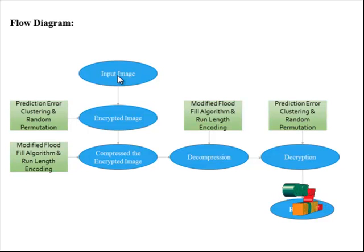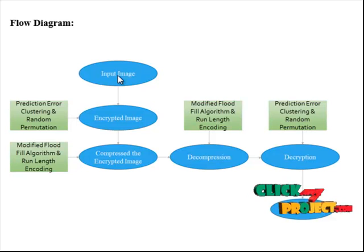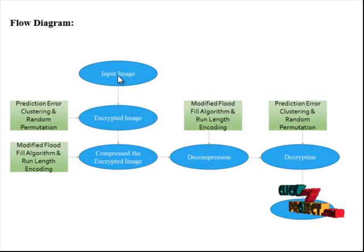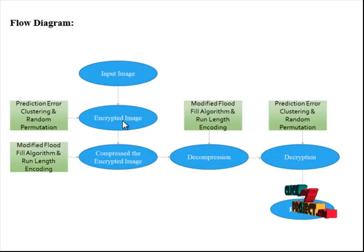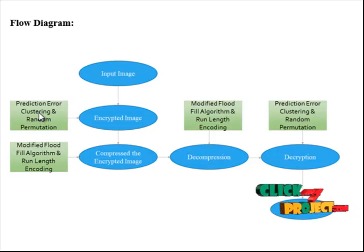Image segmentation produces a set of segments that collectively cover the entire image, or a set of contours extracted from the image. Each pixel in a region is similar with respect to some characteristics such as color, intensity, or texture. Adjacent regions are significantly different with respect to the same characteristics. Next, in the encryption process, two algorithms are proposed — GAP, that is gradient adjusted prediction. Gradient adjusted prediction is an efficient prediction method for lossless compression.